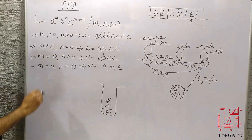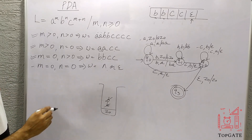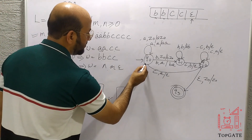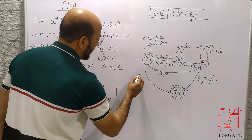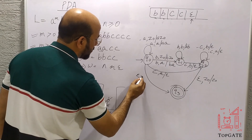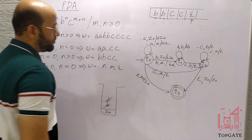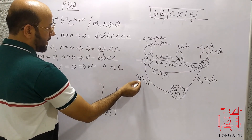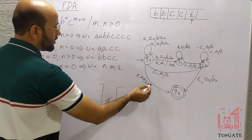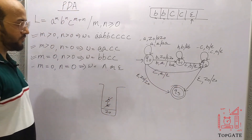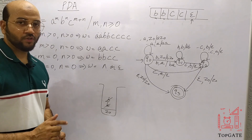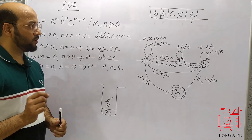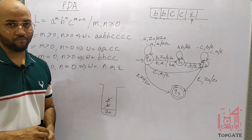For the last case where m equals zero and n equals zero, the string is just epsilon. We simply add a move from q0 on epsilon, z0 — writing z0 — going directly to the final state. So at q0, the element to process is epsilon, the topmost element is z0, and we reach the final state. If there are any doubts, you can write them in the comment section. Thank you so much.